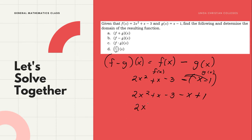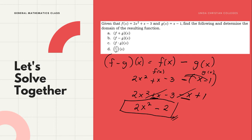We have plus x minus x — same variable, opposite signs — they cancel out. Then we have negative 3 plus 1, which equals negative 2. So the final answer for (f-g)(x) is 2x² - 2.